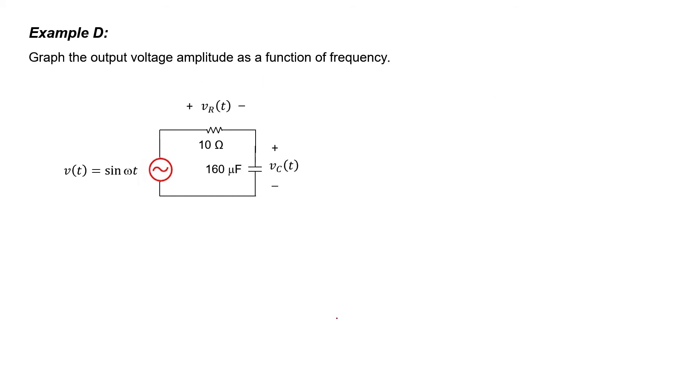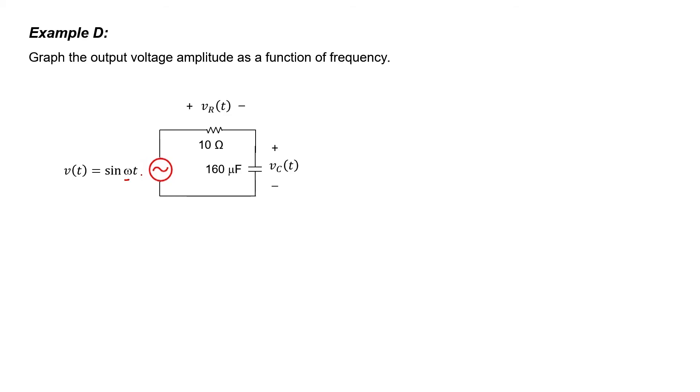In the final example, we're going to graph the output voltage amplitude as a function of frequency. Let's first think conceptually: if the frequency is high, the capacitor has trouble charging and discharging because capacitors take time to do so. The faster the polarity of the source switches from positive to negative, the less time each cycle the capacitor has to charge and discharge. That's why the impedance of a capacitor is 1/(j*omega*C) — omega is in the denominator, so as frequency increases, the reactance of the capacitor decreases. Let's find the phasor voltage across the capacitor first, then the resistor.